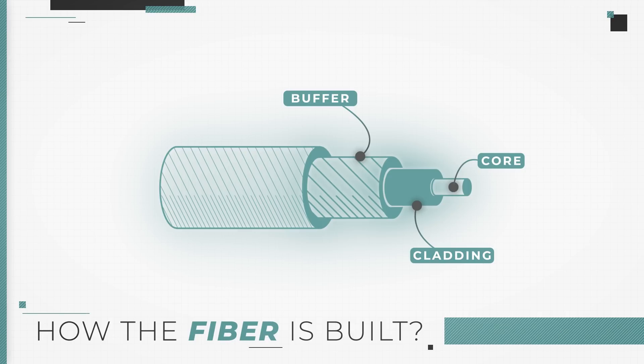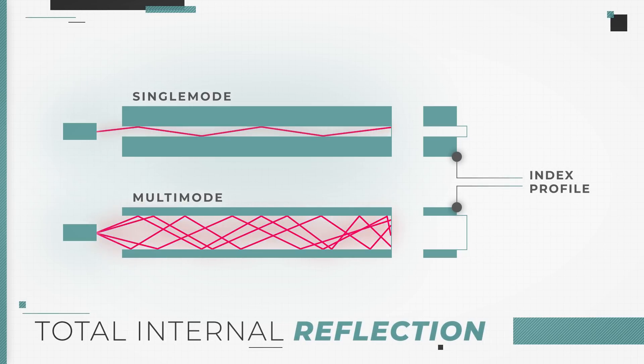A buffer which protects them from moisture and physical damages, and a jacket which is a protective outer coating. In order to trap the light, also known as total internal reflection, the refractive index of the core has to be higher than of its cladding.